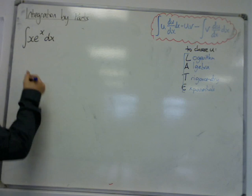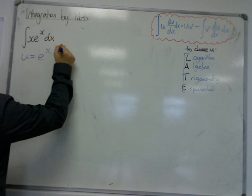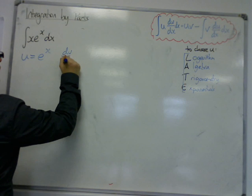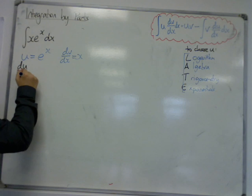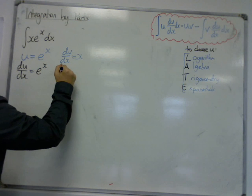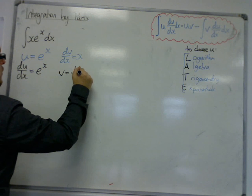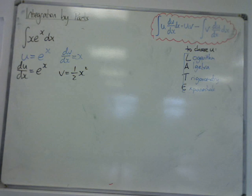Let's let u be the e to the x and the dv by dx to be x. So du by dx is e to the x and v is equal to one half x squared. So I'm integrating x, okay.